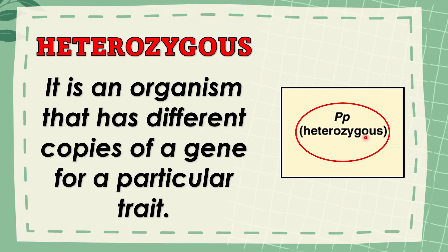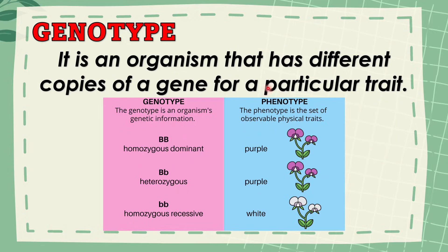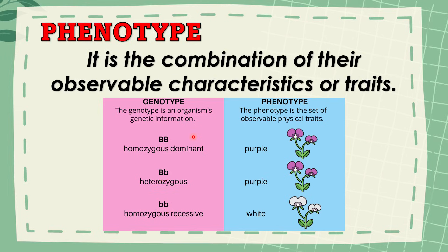Homozygous means the same and heterozygous means different. Next, we have genotype. Genotype contains the organism's genetic information. For example, we have homozygous dominant for a purple flower, heterozygous dominant P and recessive P for a purple flower, and homozygous recessive for a white flower. Next, we have phenotype — it is the combination of observable characteristics or traits. The phenotype of homozygous dominant and heterozygous is purple flower, while the phenotype of homozygous recessive is white flower. Phenotype is the physical appearance or the observable physical traits of an organism. Take note of that.